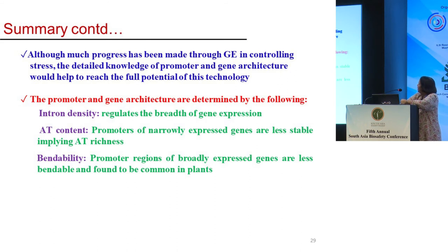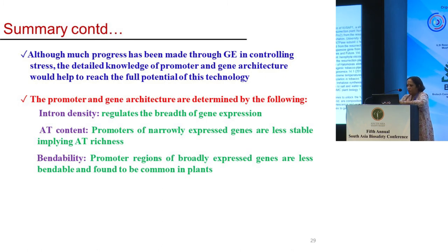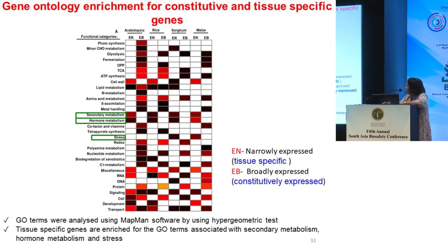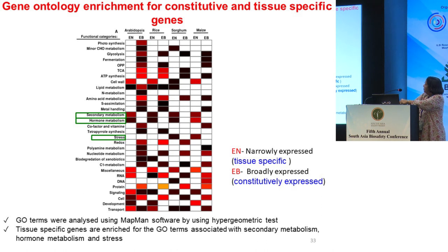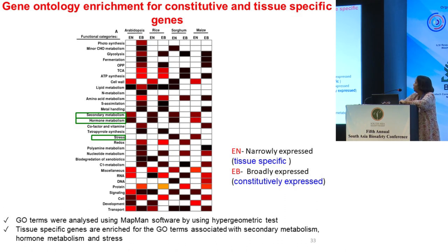The promoter and gene architecture are determined by the following: intron density regulates the breadth of gene expression; AT content or stability — promoters of narrowly expressed genes are less stable, implying AT richness; and promoter regions of broadly expressed genes are less bendable, a feature common in plants. When we did a gene ontology analysis and tried to correlate level and breadth of expression, the features which show the strongest correlation are genes associated with secondary metabolism, hormone metabolism, and stress — especially in sorghum and maize. That is what we want to focus on now, to pull out those genes and their promoters and see whether they follow a concerted kind of feature.